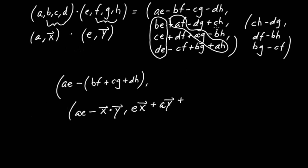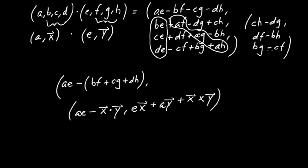So these six terms are going to be summarized as x cross y. If you've studied the cross product at all, you'll know that one of its key properties is that it takes in two three-dimensional vectors — in this case we inputted (B, C, D) and (F, G, H) — and outputs the vector (CH − DG, DF − BH, BG − CF).